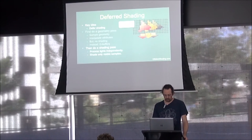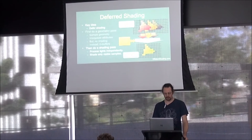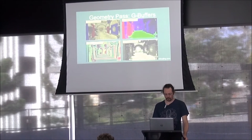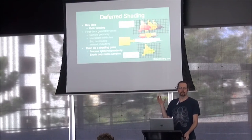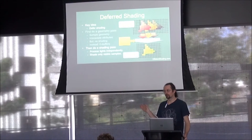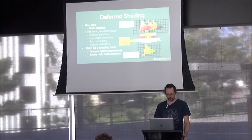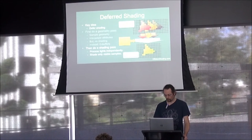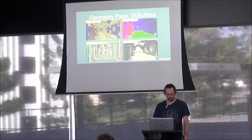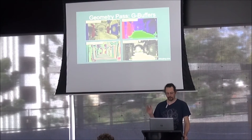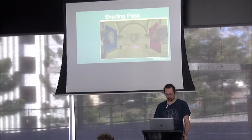In the shading pass, for each pixel you load the G-buffer data, compute the shading — and here's where you need your lights — then accumulate into the framebuffer. Since this is done after your geometry pass, depth complexity is already resolved, so you're only shading the nearest samples. Gone is the overdraw problem. G-buffers might contain color, diffuse reflectance, specular reflectance, a normal, and position encoded as depth.